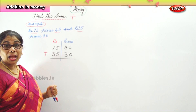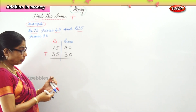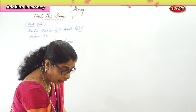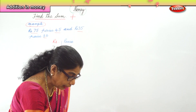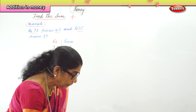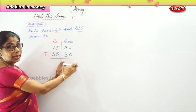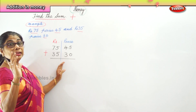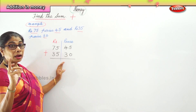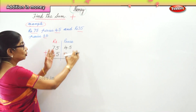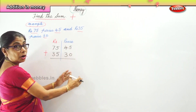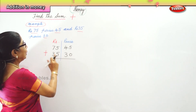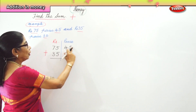Now we add. In addition, when we look at paise, remember that 1 rupee equals 100 paise. So in the paise column we cannot have more than 100 — if it reaches 100, it becomes rupees.